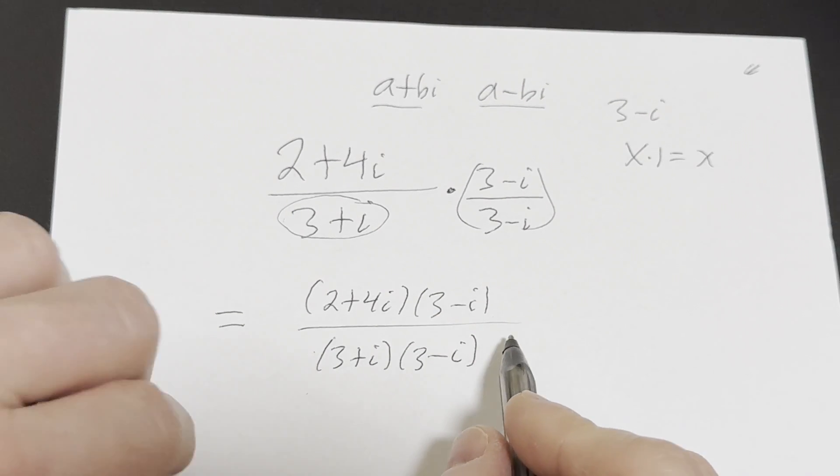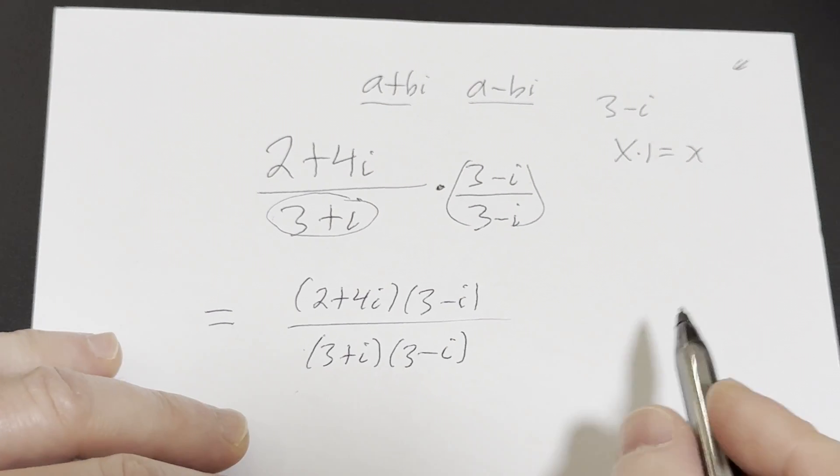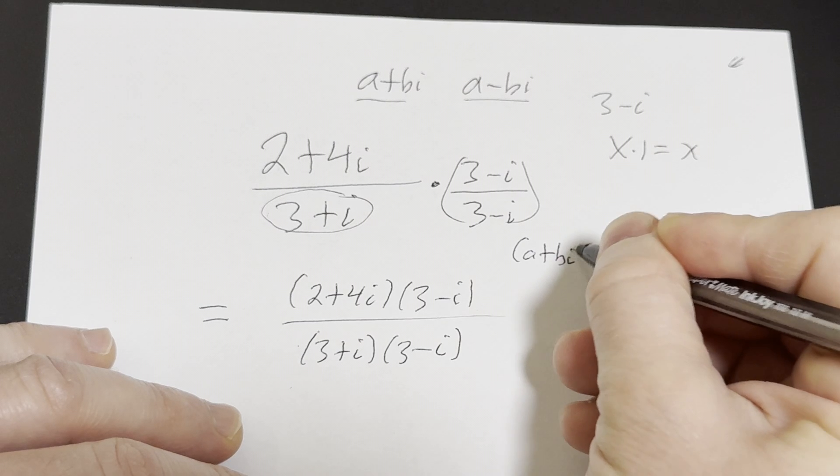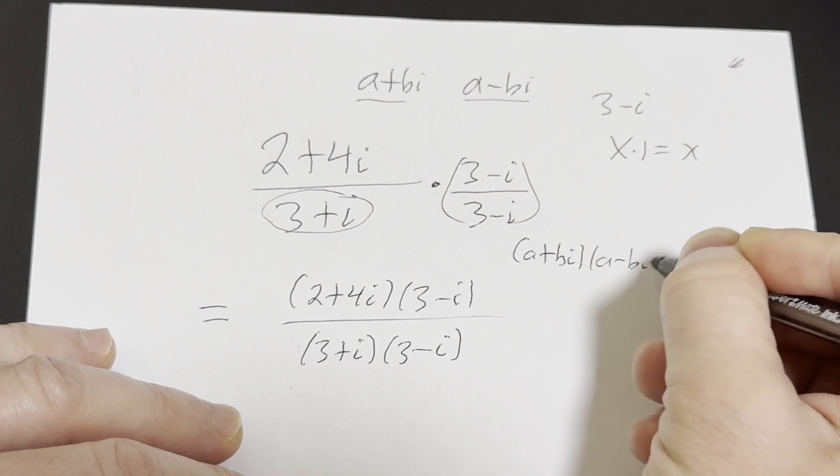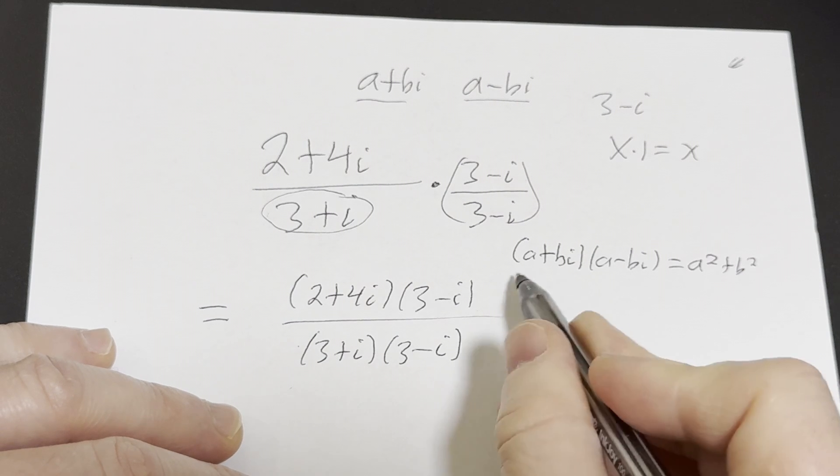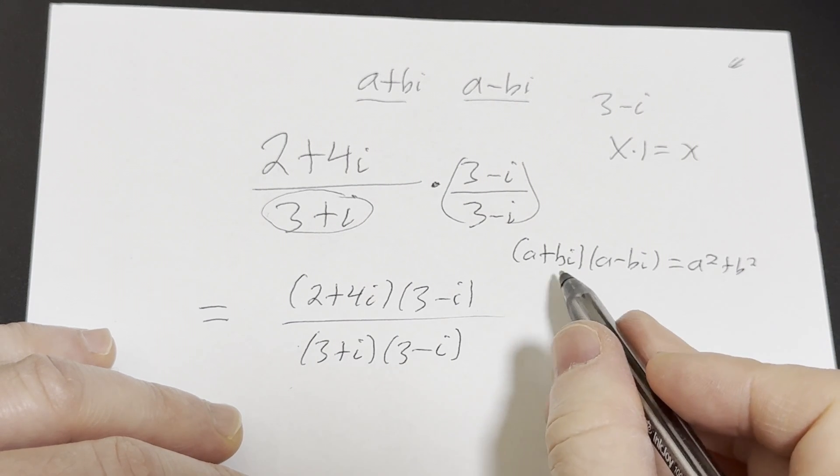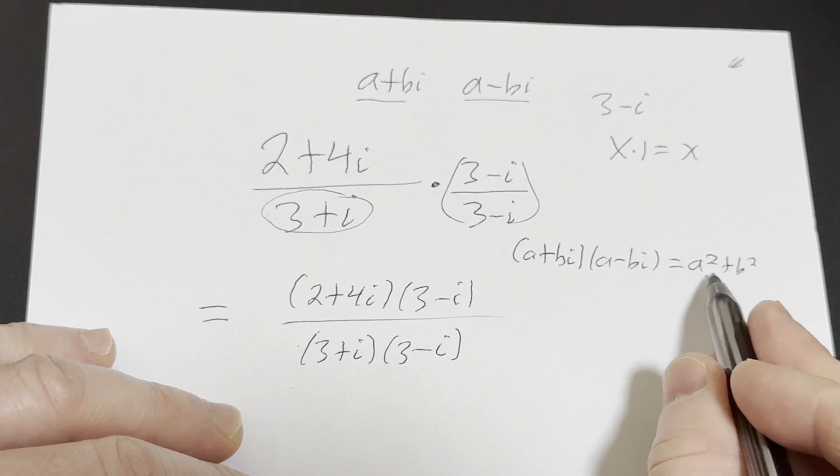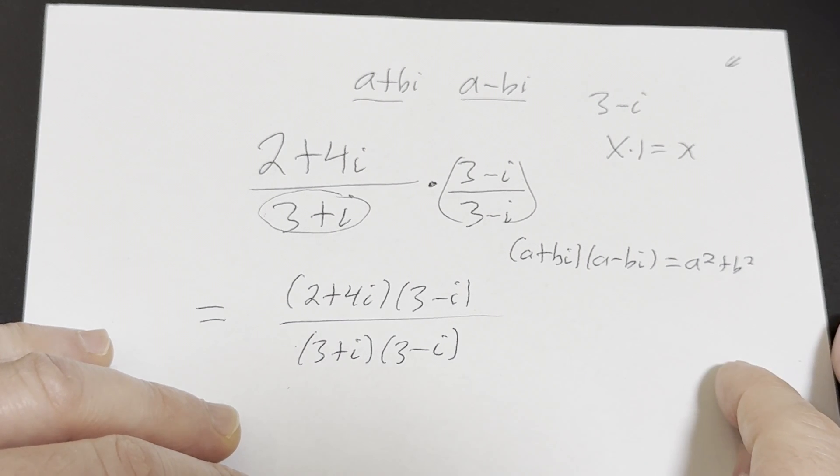Now the reason we did this is because there's a very powerful formula that says if you have a plus bi times a minus bi, this is equal to a squared plus b squared. And you can verify this via FOIL or just distributing. You'll see that all the terms, all the imaginary terms vanish and you end up with a squared plus b squared.